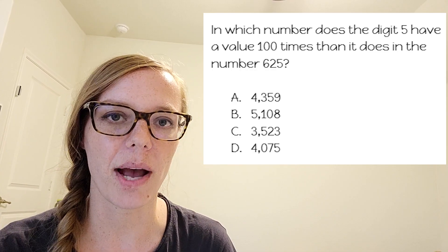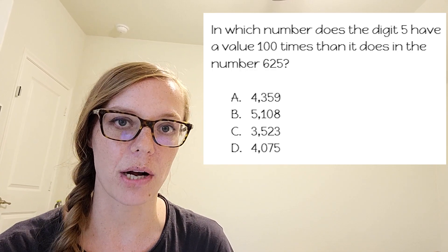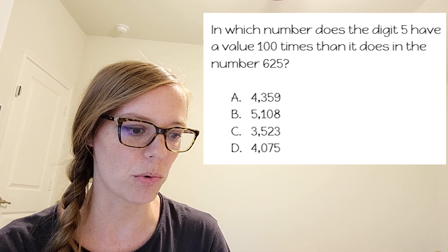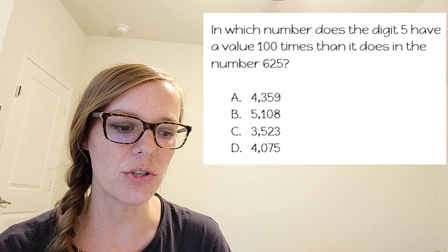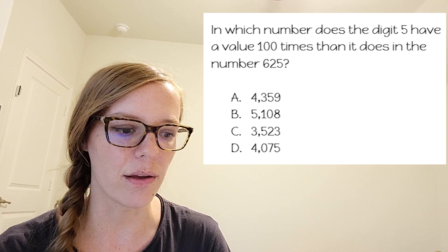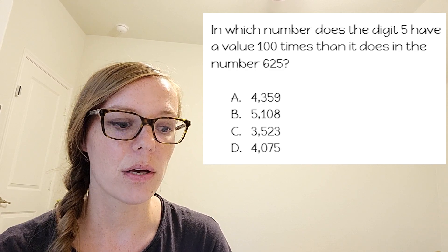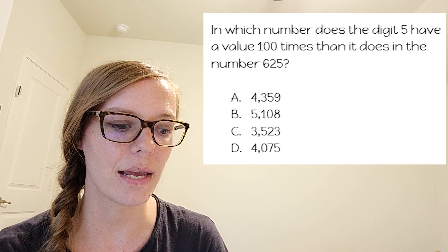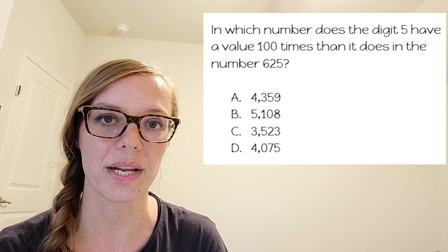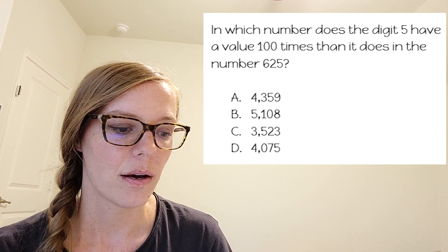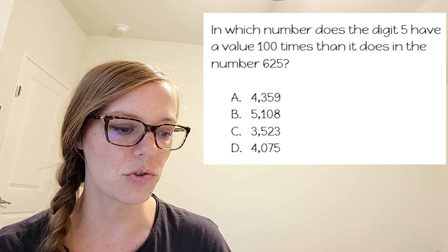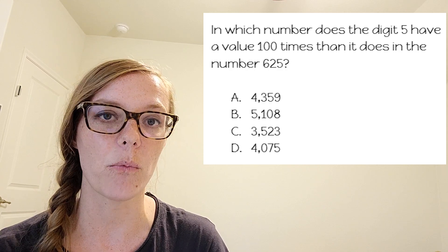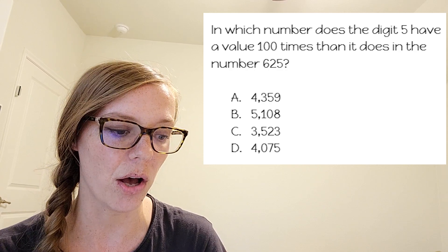So here's what I like to do. I like to start by reading the word problem through once just to get a better understanding of what we're doing. It says: in which number does the digit 5 have a value 100 times than it does in the number 625? I see the answer choices down there, and all of them have a 5 somewhere in them, so they all have that in common.